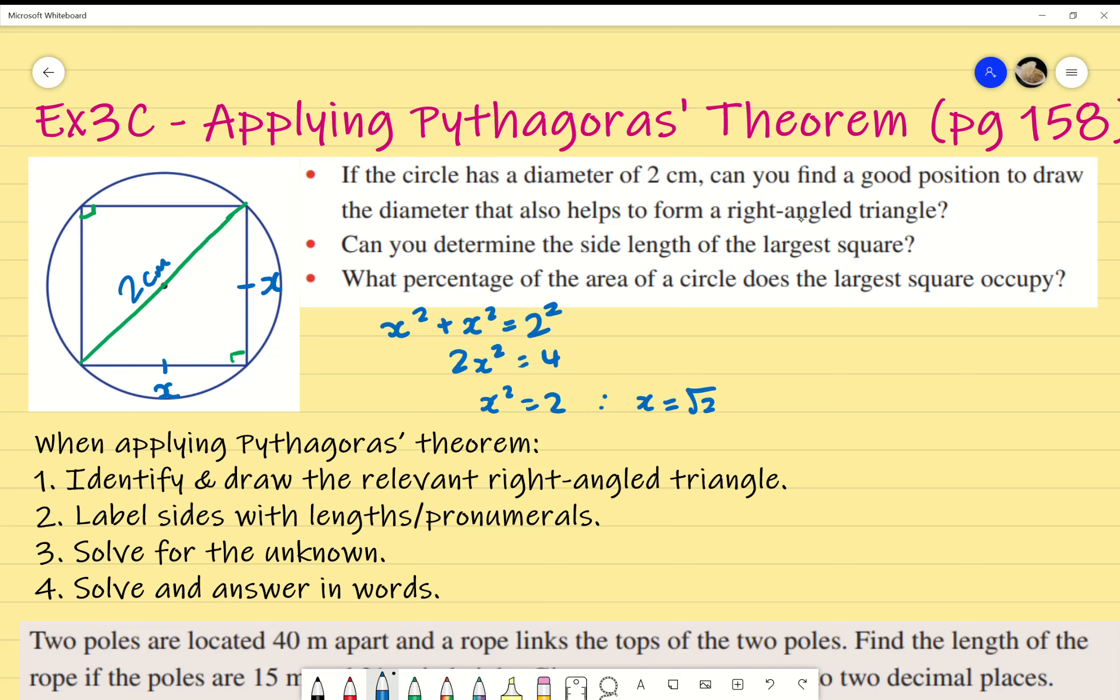Have you guys seen this symbol before? The three dots together. That just means therefore, in mathematical terms. So that is how I'd find the side length, and if I was to calculate the percentage of the area, I just calculate the area of the circle and calculate the area of the square, but I'm going to leave that for you guys if you want to do that yourself.